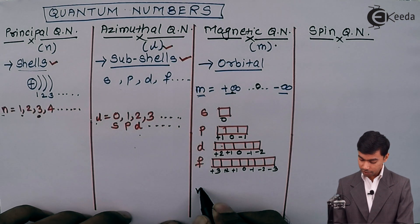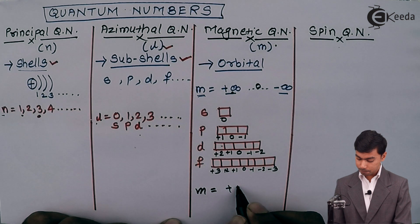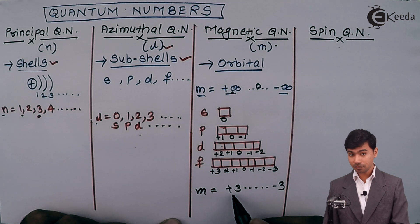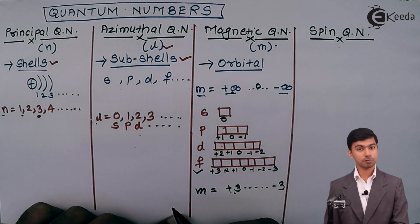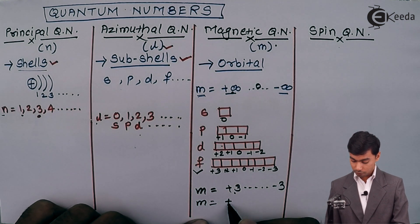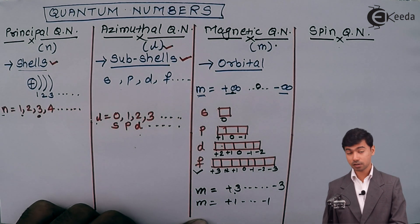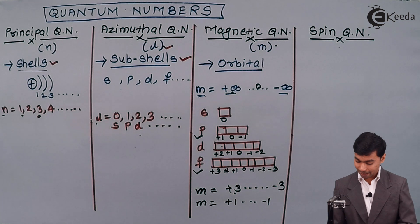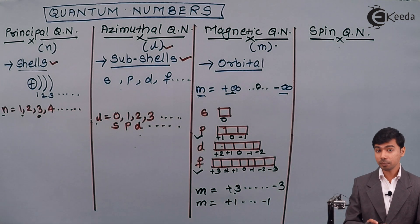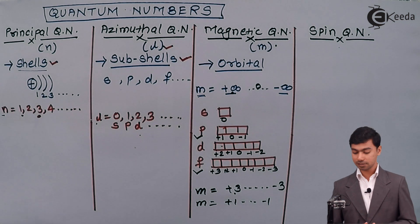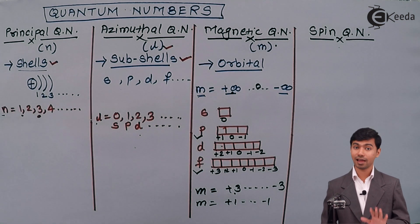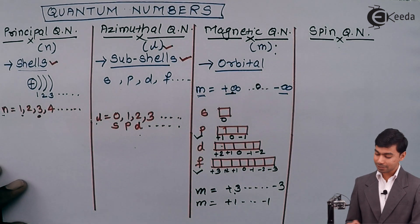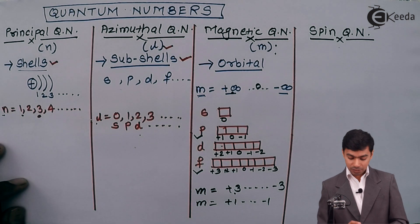Using these values, we can predict what kind of orbital we are referring to. For example, if m has values from +3 to −3, that corresponds to the f subshell. If m has values from +1 to −1, that is the p subshell. This way, we can determine what kind of orbitals are present and how many orbitals are present in that part of an atom using the magnetic quantum number.